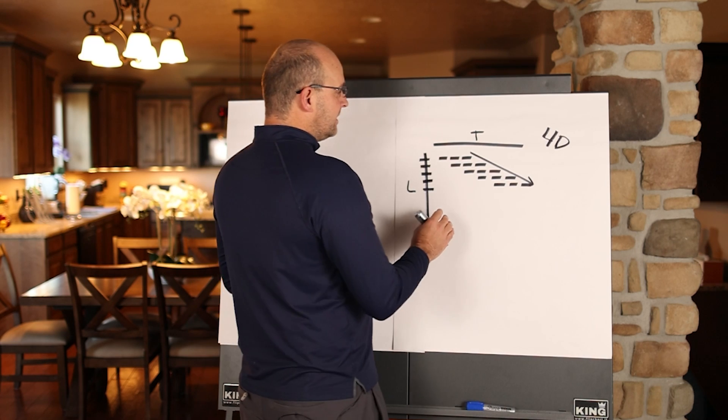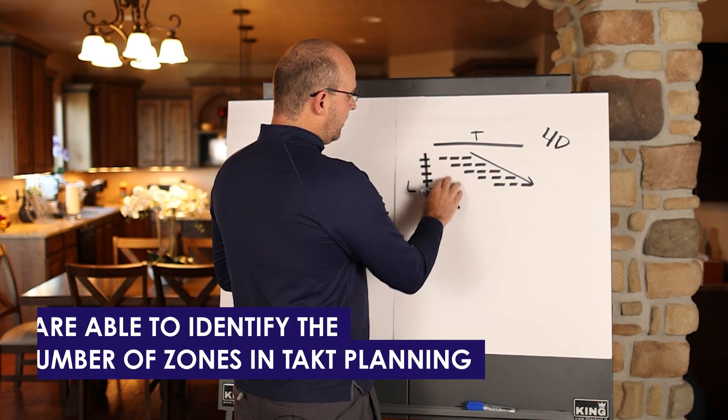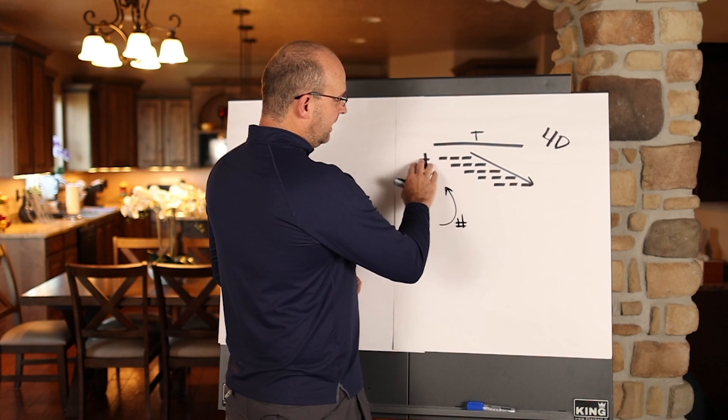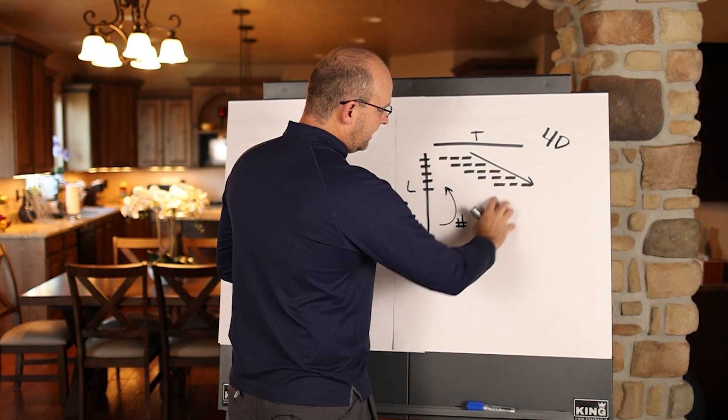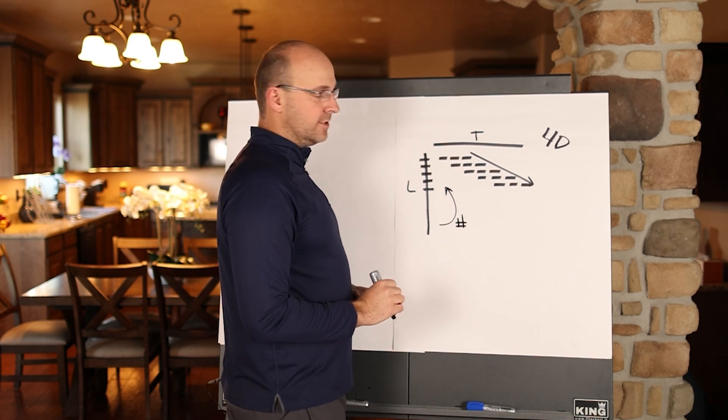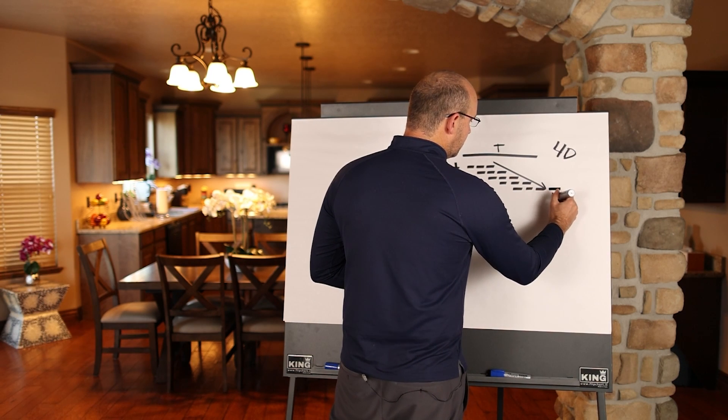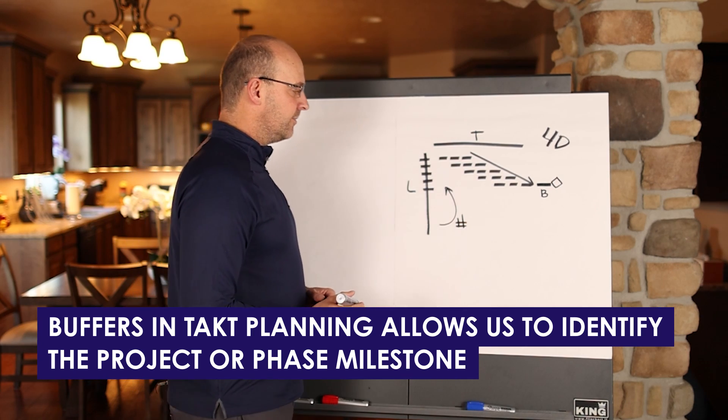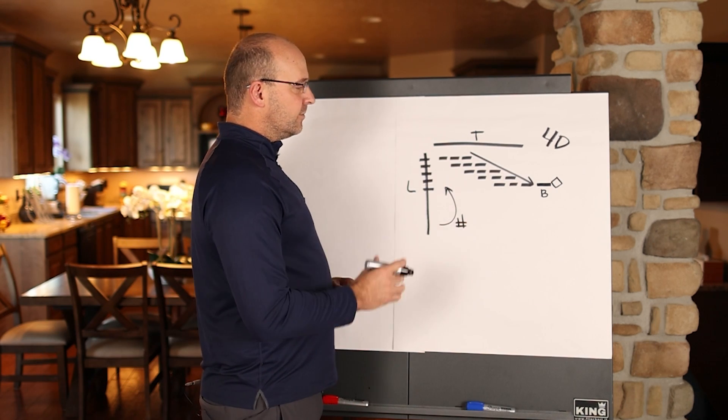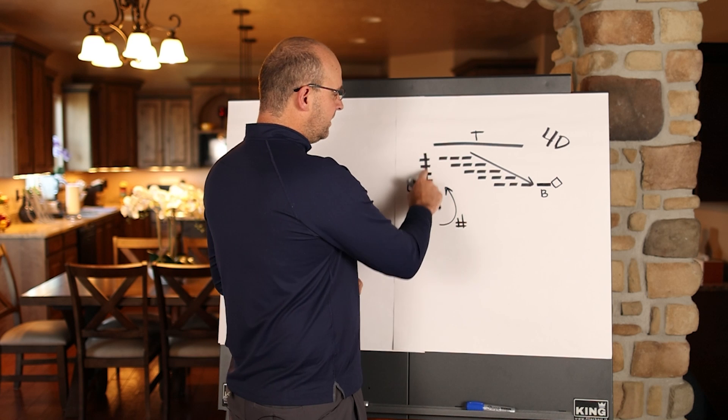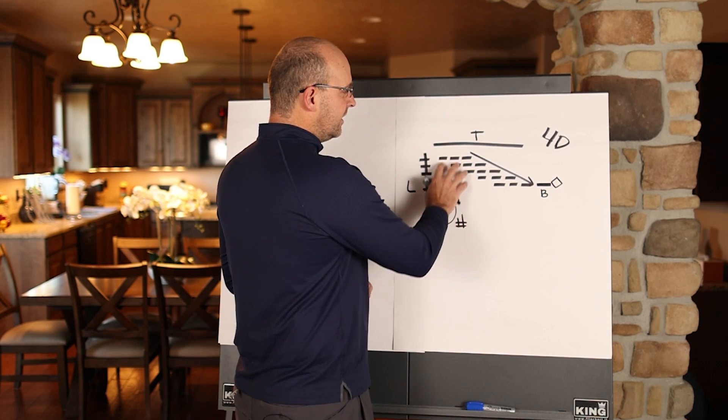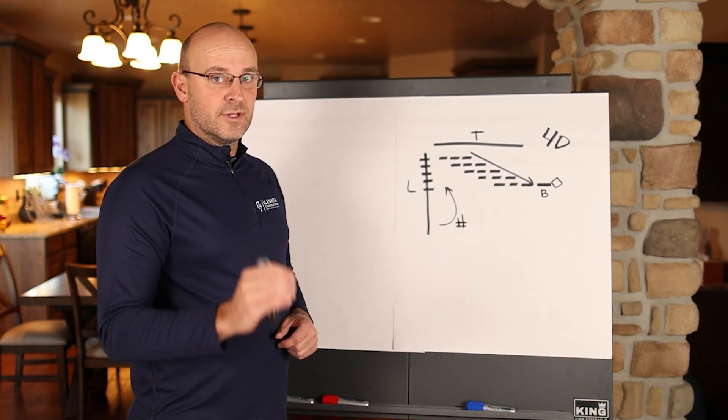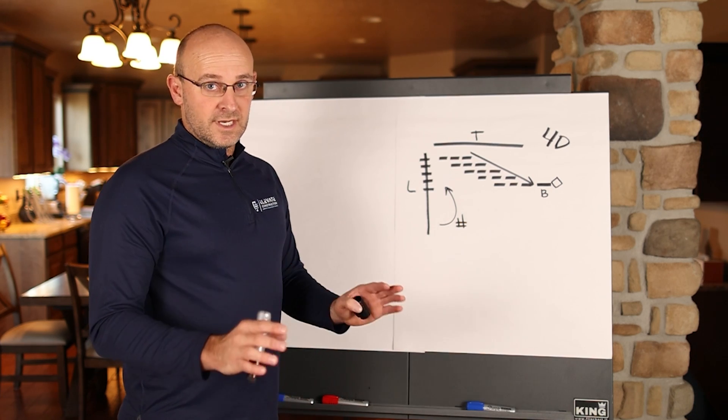Now, what's key about takt planning is that you are able to identify the right number of zones in order to go fast, because if you have more zones for the same work, this will actually incline and pull in your end schedule. The other thing with takt planning is we always detail buffers at the end, which allows us to identify our project or phase milestone. So this is a really effective system. So you have the right number of zones, you have leveled zones, you have leveled trades. This is the schedule that can get you the most amount of flow and the best possible option for your trades in the field.